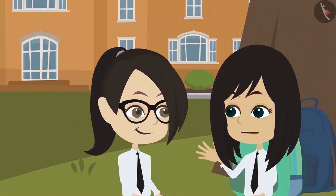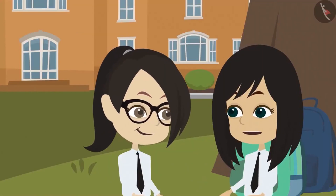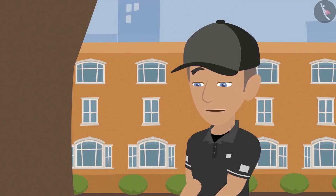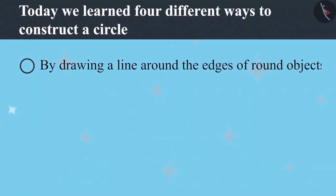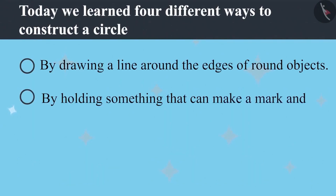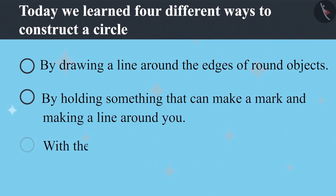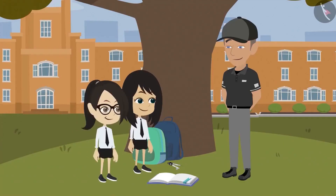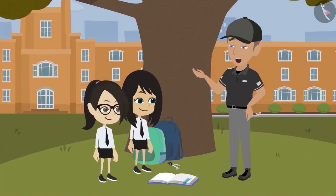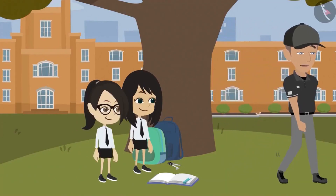This is an amazing tool. We can easily make a circle with this. Now we know four methods to draw a circle. One is by tracing the edge of round objects. The second is by holding something that can make a mark and then making a line around you. The third method is with the help of nail and thread. And fourth, by using a compass.